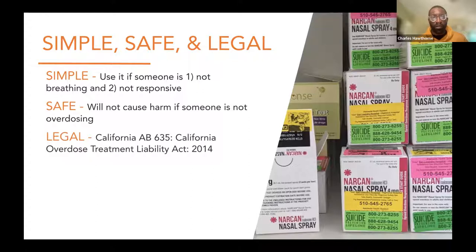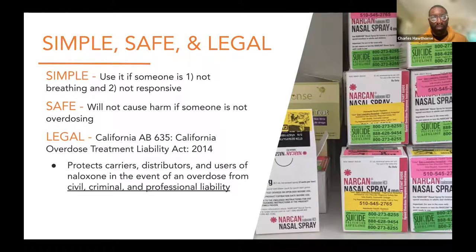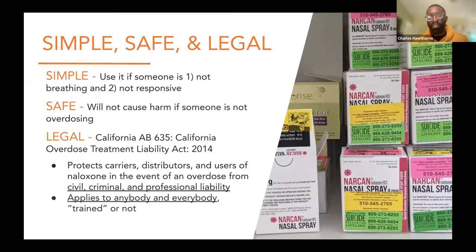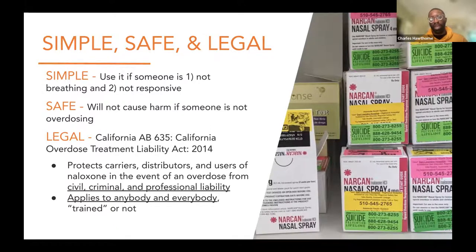Naloxone is also legal. There are several legal protections around naloxone in California. AB 635, also known as the California Overdose Treatment Liability Act, protects people who carry, distribute, and use naloxone in the event of an overdose from civil, criminal, and professional liabilities. So if you, in your role as a social worker, have naloxone on your person even if your school does not have a naloxone distribution program, and a student has an overdose and you use it to reverse that overdose, you are protected from civil, criminal, and professional liabilities. It applies to anybody and everybody, regardless of whether you went through an official overdose prevention training.